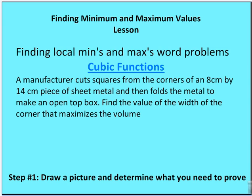So we want to figure out how to maximize typically volume with a cubic function. We're going to take a couple of examples and figure out how to estimate at least some way to maximize volume using cubic functions. Here's the example: A manufacturer cuts squares from corners of an 8 centimeter by 14 centimeter piece of sheet metal and then folds the metal to make an open top box. Find the value of the width of the corner that maximizes the volume.